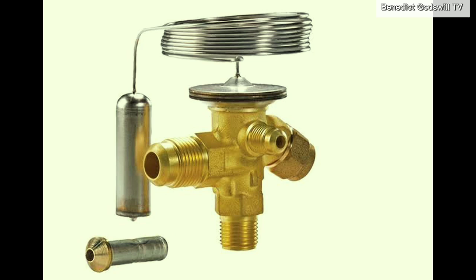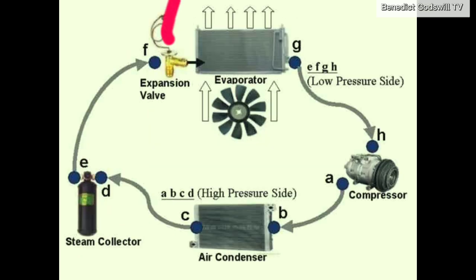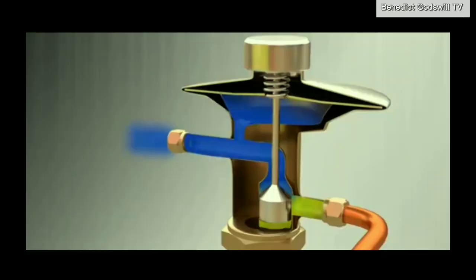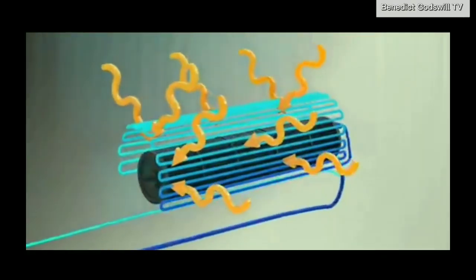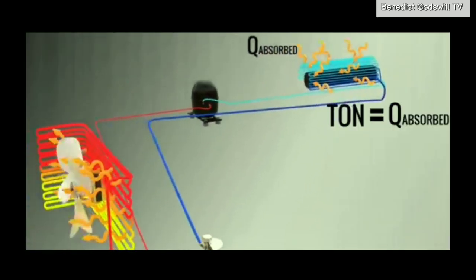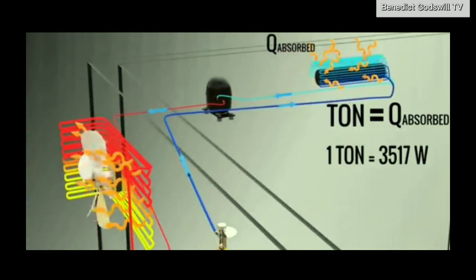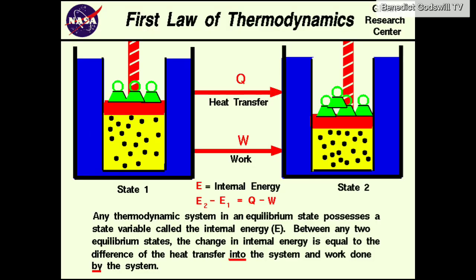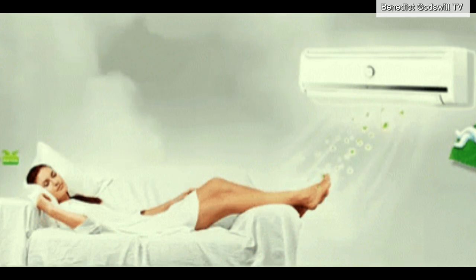Now the refrigerant, back in liquid form but still under high pressure, passes through the expansion valve. This component acts like a nozzle, suddenly dropping the pressure and temperature of the refrigerant. The cold, low-pressure liquid then returns to the evaporator coil, ready to absorb heat again, and the entire cycle repeats over and over — quietly, efficiently, scientifically.